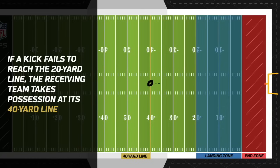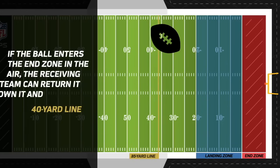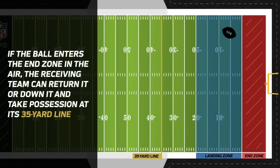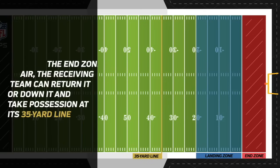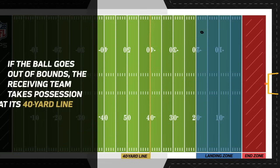There are also incentives for the kickoff team to kick the football into the landing zone — if you don't, the possession begins at the 40 yard line. The ball must be in play at some point. If the ball enters the end zone in the air, the receiving team can return it or down it and take possession at the 35 yard line. So you want to kick inside the landing zone to prevent the receiving team from having good field position at the 35.